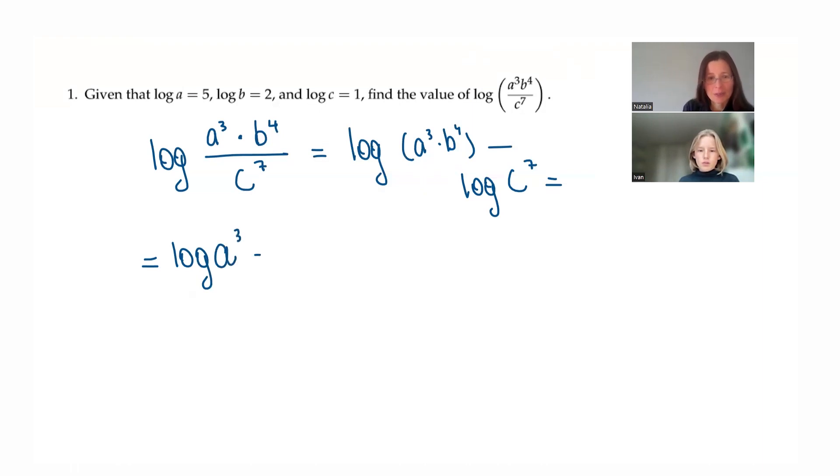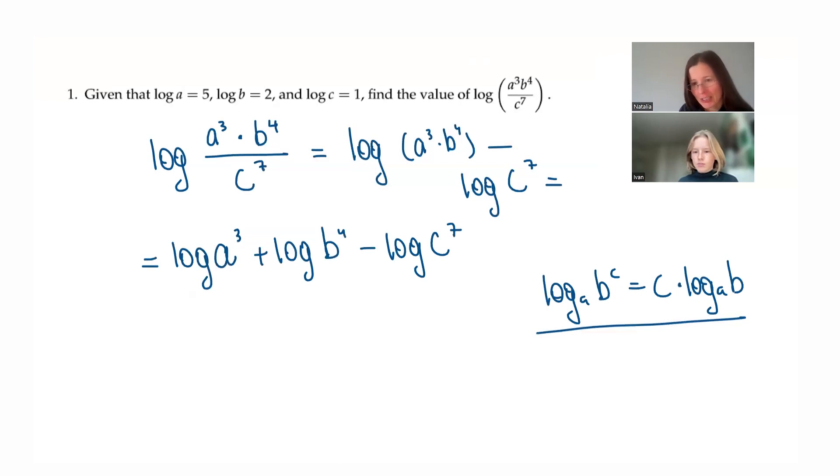Okay, so log A cubed plus log B to the fourth minus log C to the seventh. And now all of them have the exponents, so we are going to use that rule, the third one that we showed. Now we just have log A times three, log B times four, minus log C times seven. Okay, so this is the rule that we are using. Okay, and now all the exponents will go to the front here, here, and here, just like it did in the general form of this formula.